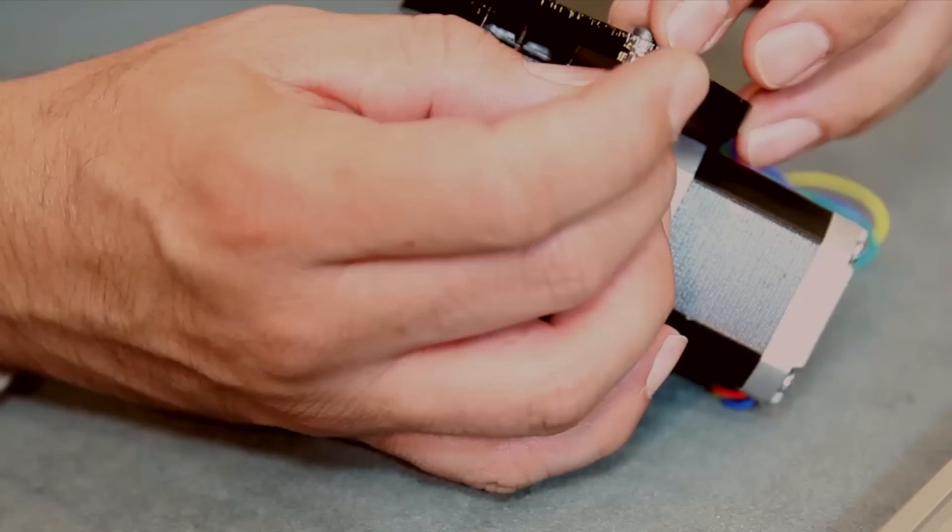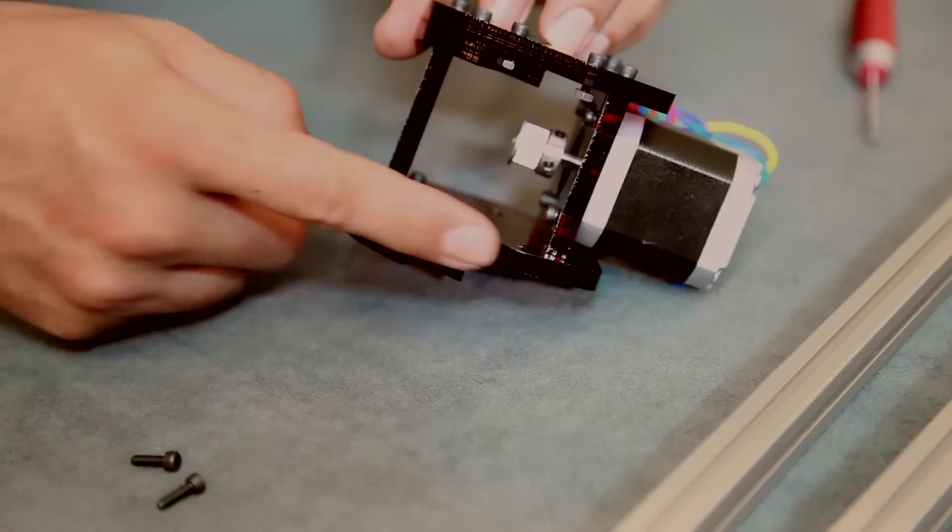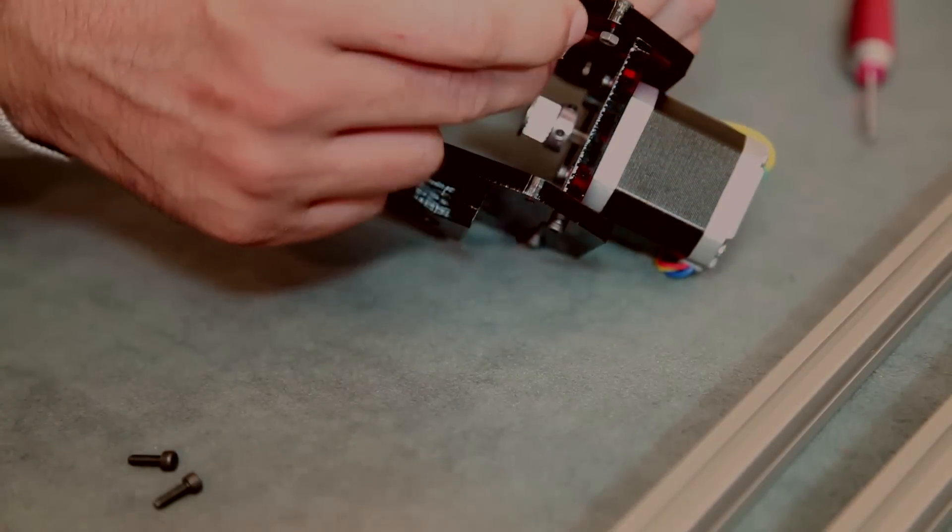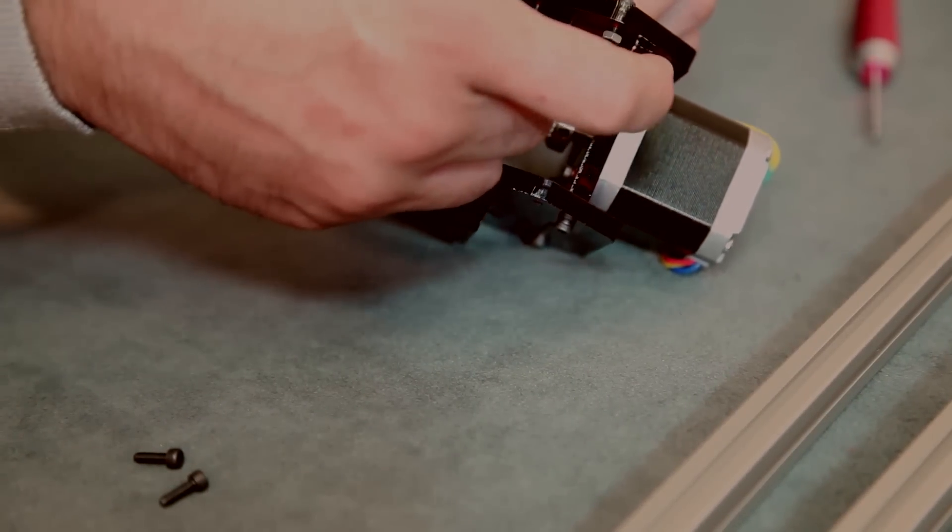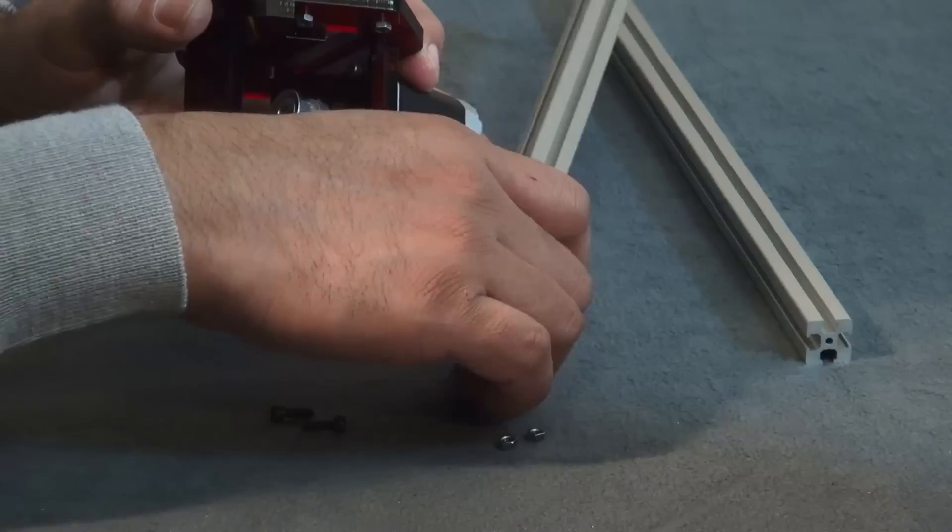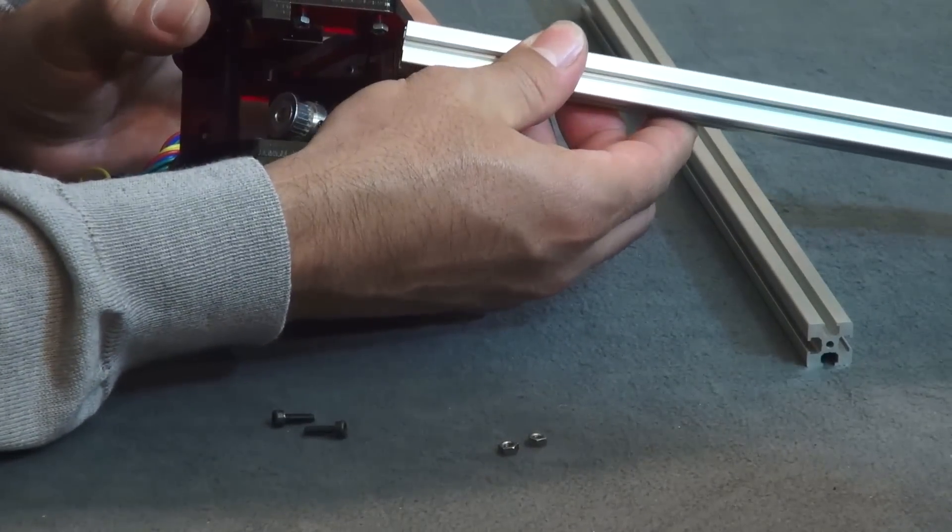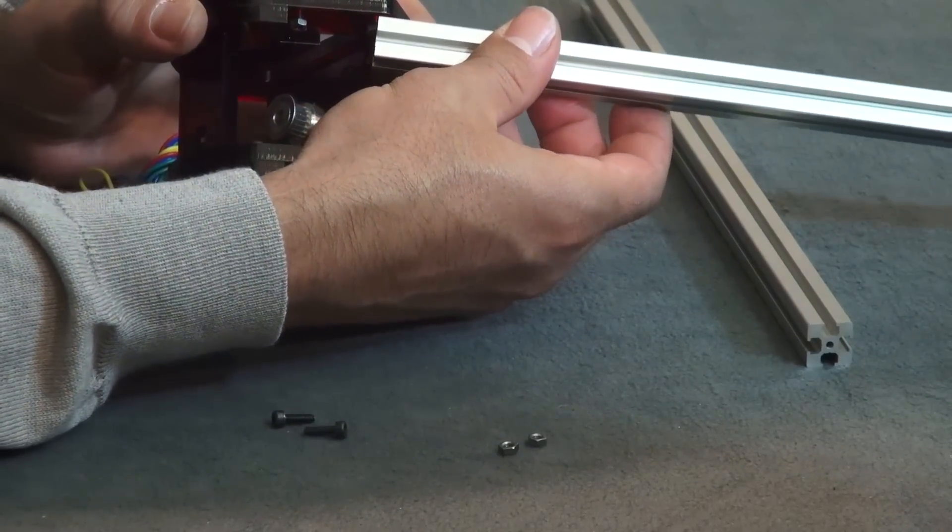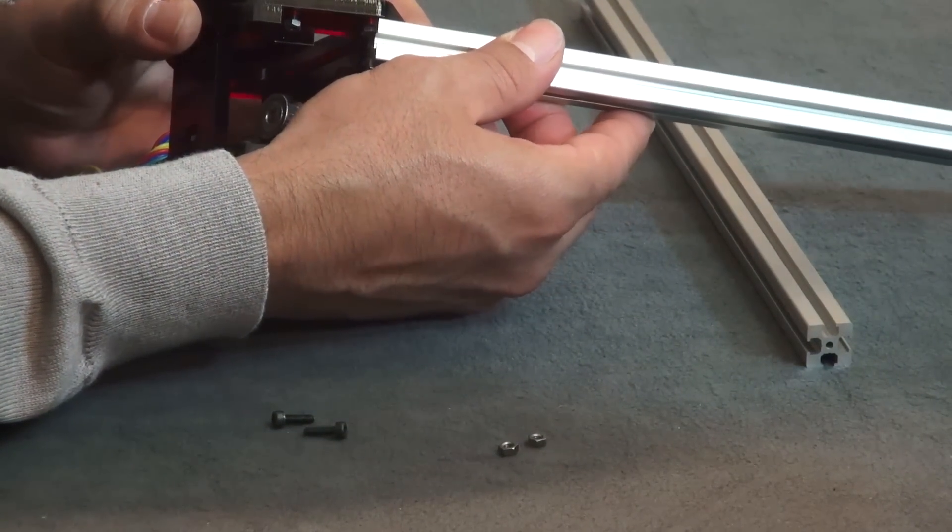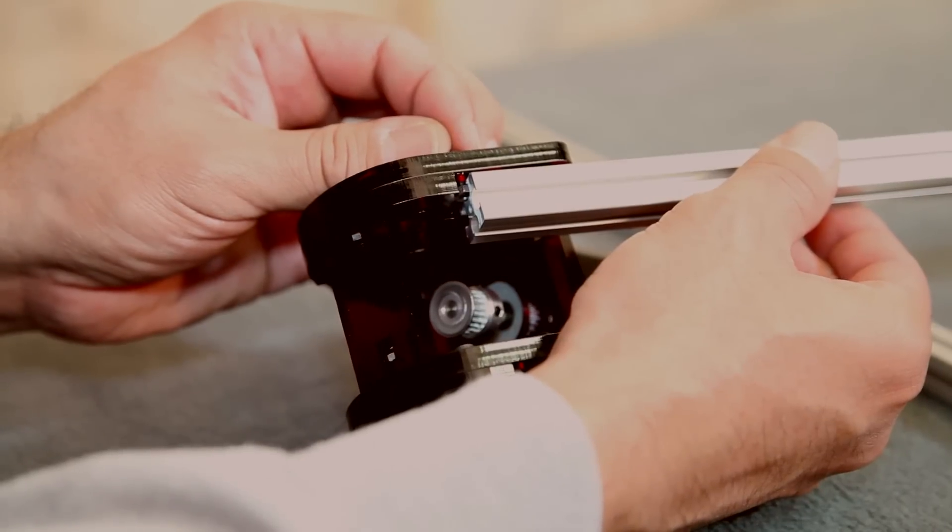You're going to do that for these top two and you're going to do it for the bottom two. The reason we're keeping the nuts loose from the bolts is you're going to need that space there so you can slide the aluminum bar through.